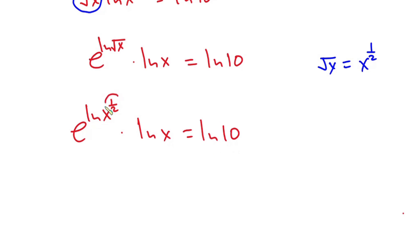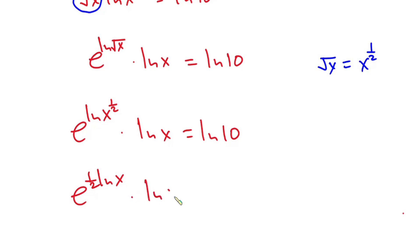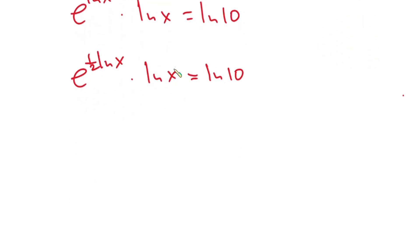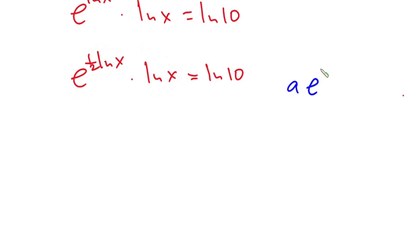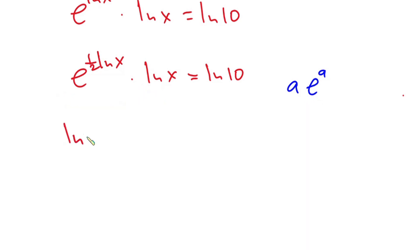Now let's slowly rearrange. We get e to the power one half natural log of x, times natural log of x, times natural log of x, equal to natural log of 10. I want to express this whole thing in the form a·e^a. Moving things around, we have natural log of x times e to the power one half natural log of x is equal to natural log of 10.